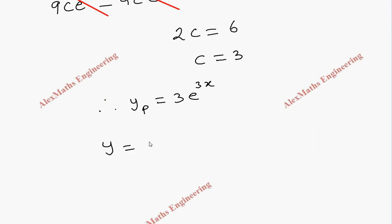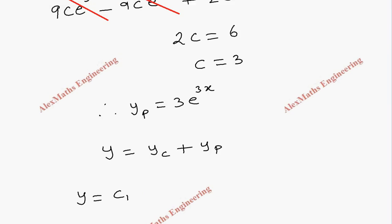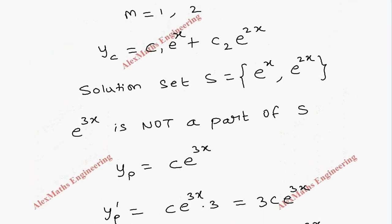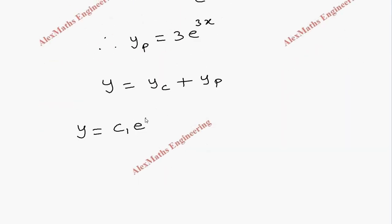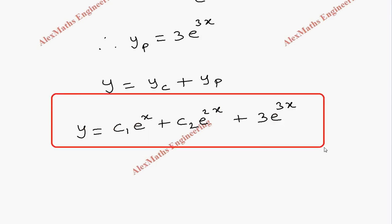That is c₁e^x plus c₂e^2x plus 3e^3x. So we got the complete solution.